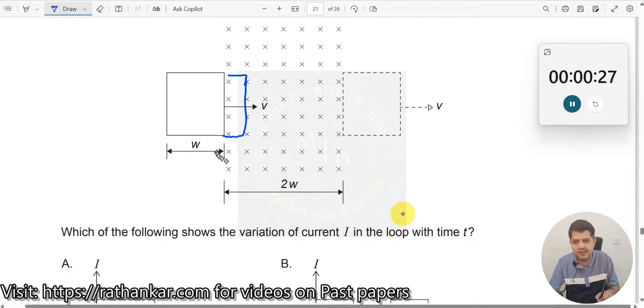Magnetic field is constant. Why should there be an induced current over here? Induced current is there because there is a change in the magnetic flux. We know that phi is equal to B into A, B into A cos theta.